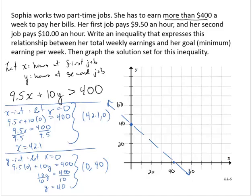Now let's do a test point. Well, like usual, if it doesn't go through 0, 0, let's test 0, 0. And so in context, that means what if Sophia worked 0 hours at both jobs? So then we would have 9.5 times 0 plus 10 times 0. Is that greater than 400? Well, 0 is not greater than 400.